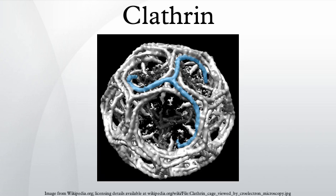The clathrin triskelion is composed of three clathrin heavy chains interacting at their C-termini. Each 190 kDa heavy chain has a 25 kDa light chain tightly bound to it. The three heavy chains provide the structural backbone of the clathrin lattice, and the three light chains are thought to regulate the formation and disassembly of a clathrin lattice. There are two forms of clathrin light chains, designated A and B. The main clathrin heavy chain, located on chromosome 17 in humans, is found in all cells.